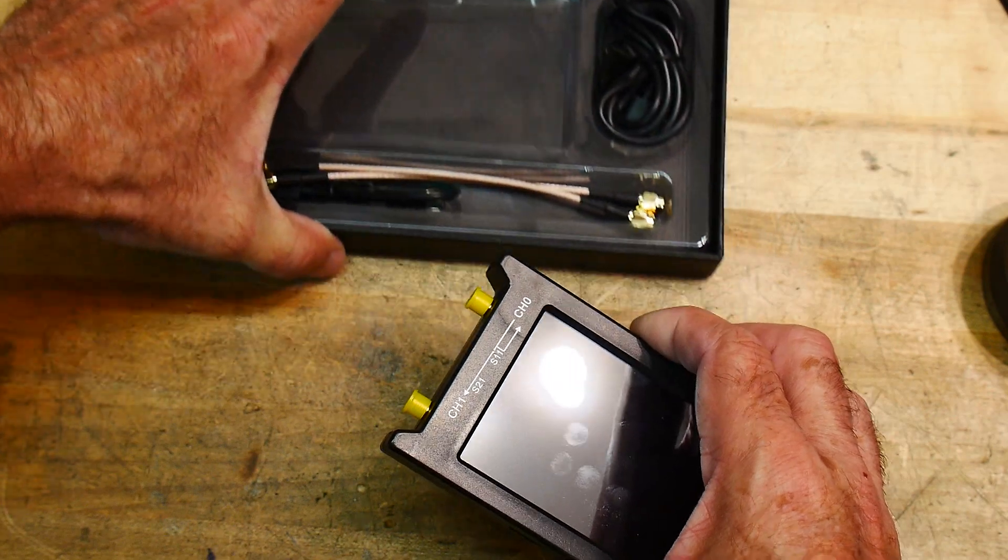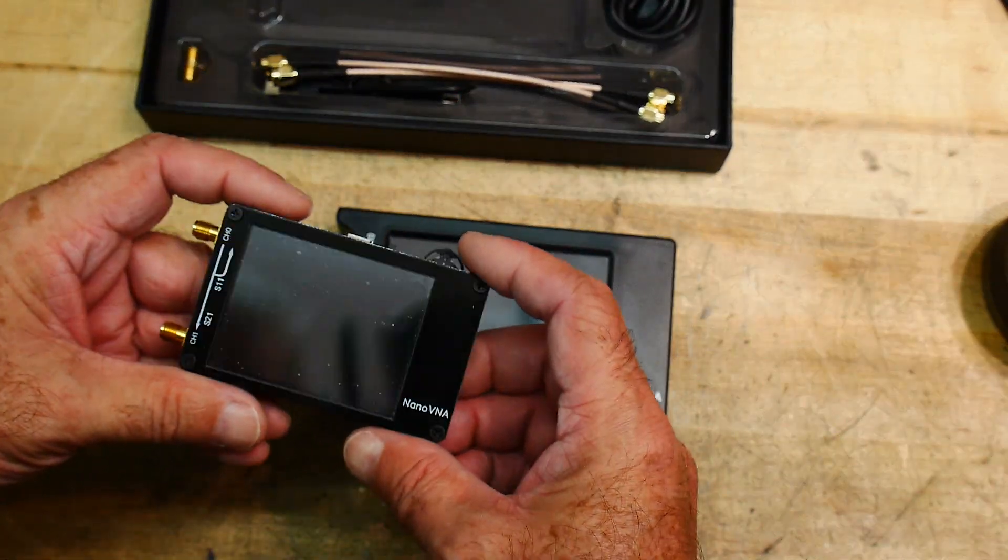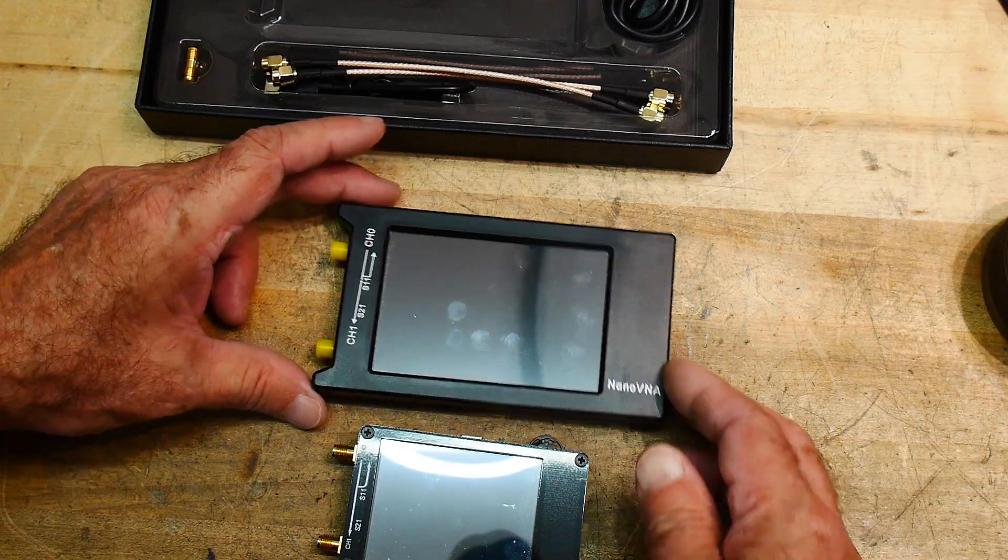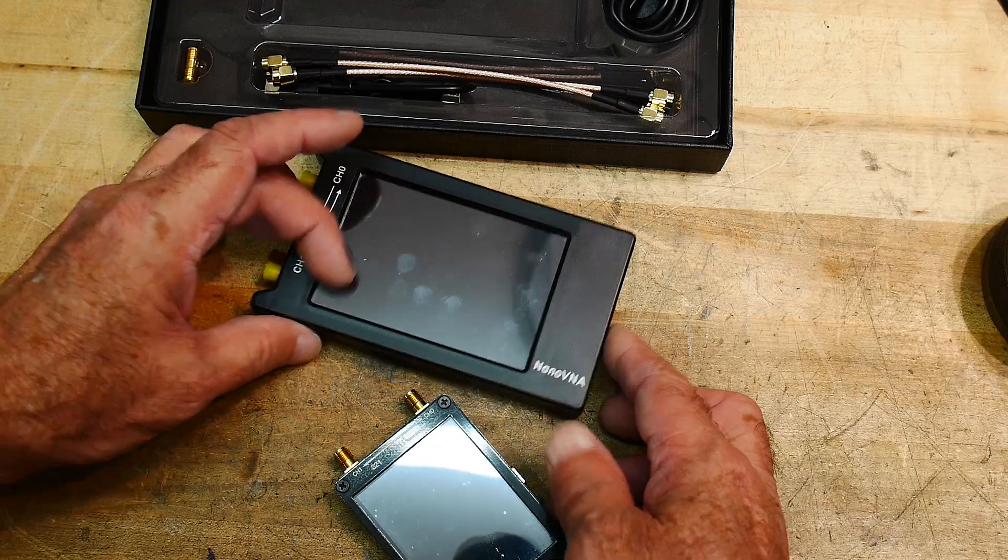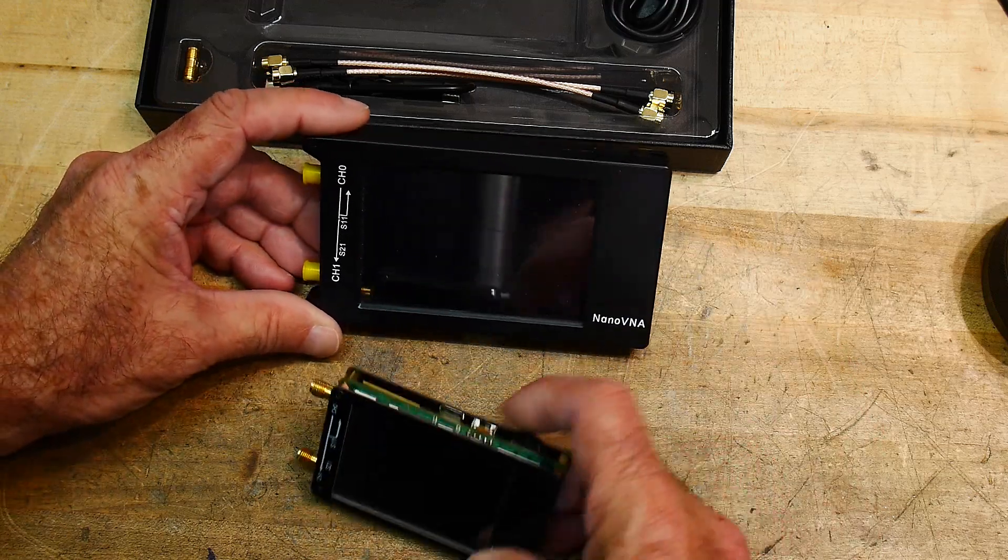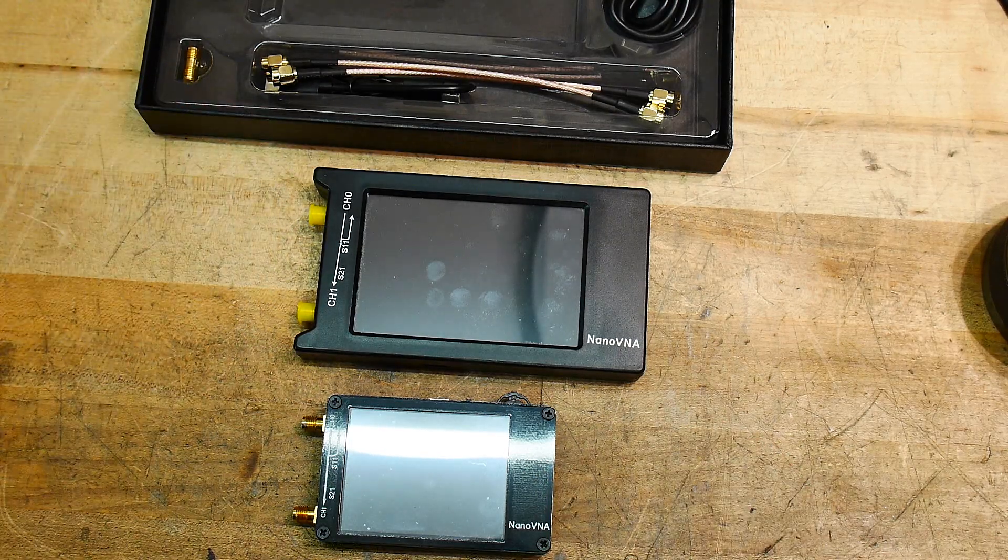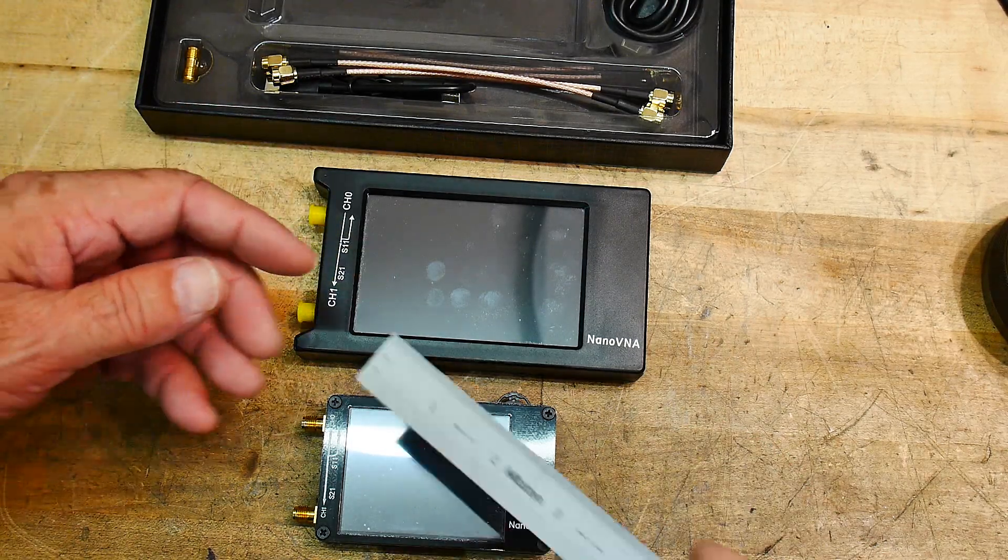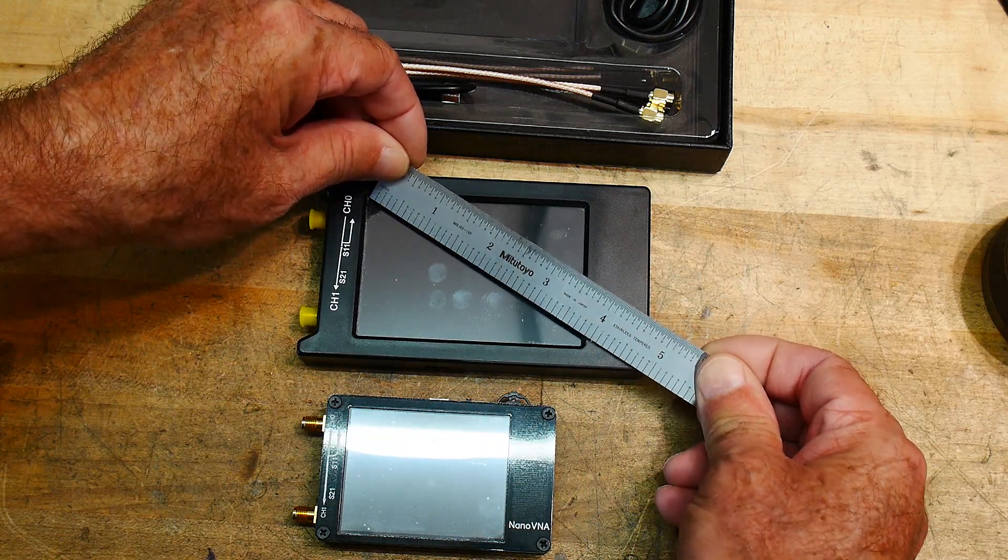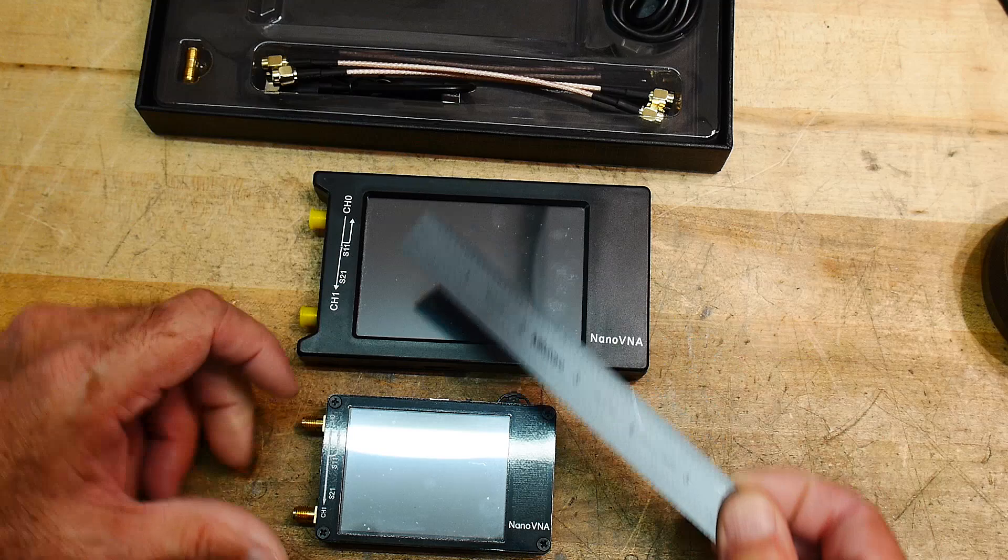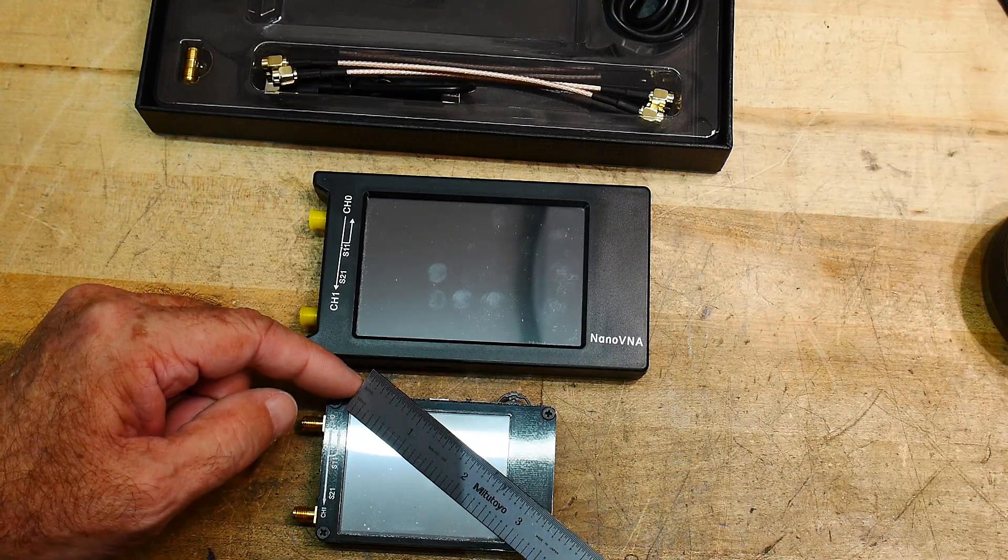But it is quite a bit bigger. So let's compare it to the original Nano VNA, so you can get an idea of size differences. Quite a difference. So let's measure the actual screen size. This one claims to be four inches, so let's see if it measures four inches. And it does measure four inches corner to corner. This one measures three inches corner to corner.